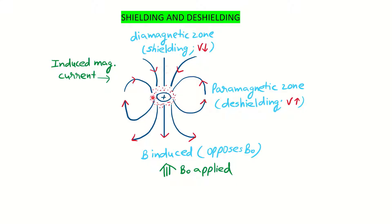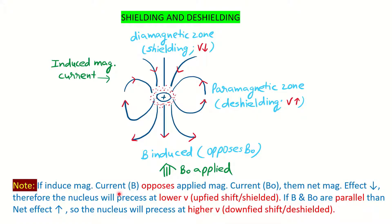On the peripheral side, the induced magnetic current is parallel with the applied field, so the net magnetic field is enhanced. This zone is called the paramagnetic zone — we call this deshielding — and the net frequency increases. So: any proton in the paramagnetic zone has an increased chemical shift value; any proton in the diamagnetic zone has a decreased chemical shift. Lower frequency is called upfield shift or shielding; higher frequency is called downfield shift or deshielding.